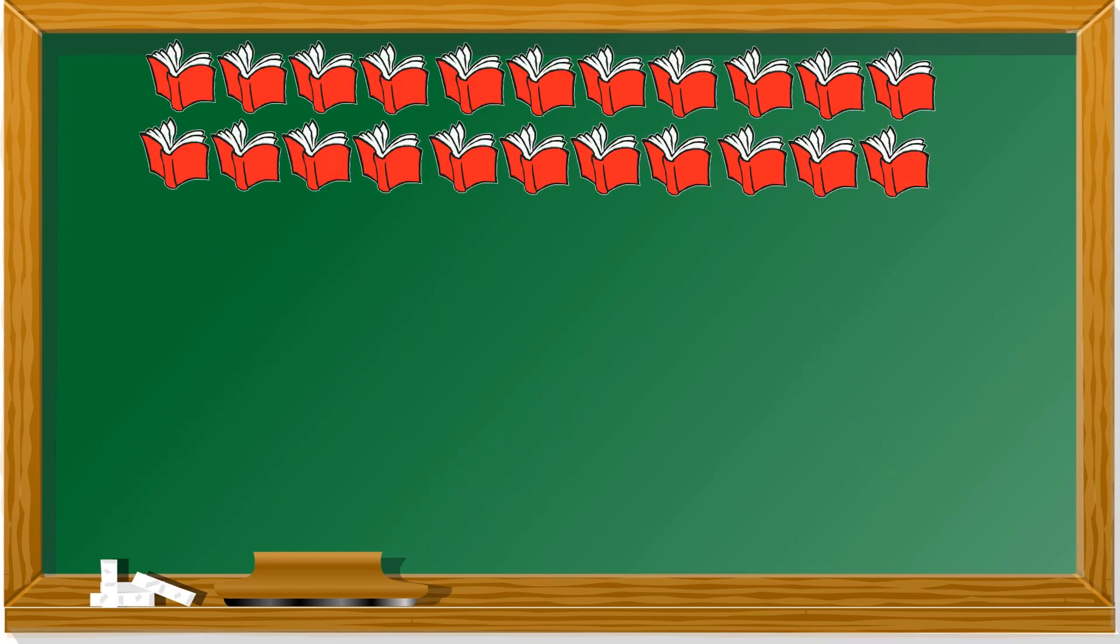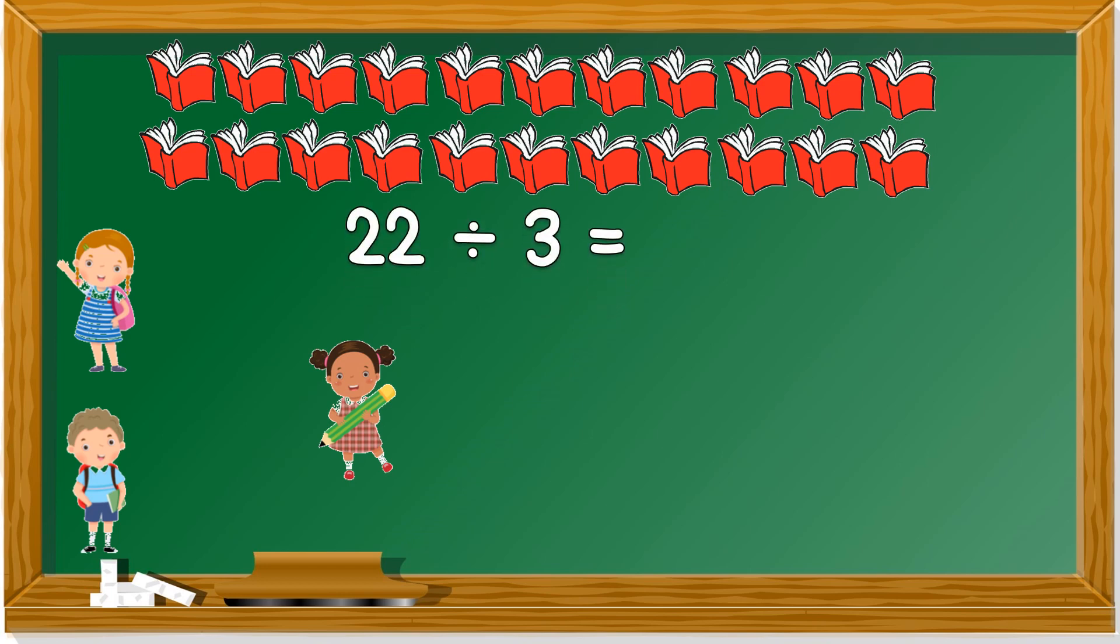Next question. What are these? These are books. How many books are there? Can you count? I give you 30 seconds to count. Have you finished counting? How many books are there? There are 22 books. Now we have 3 children. These 22 books, we have to divide by 3. Each kid must get them equally. If one kid gets 5, the other 2 kids must also get 5. Come, let's divide.